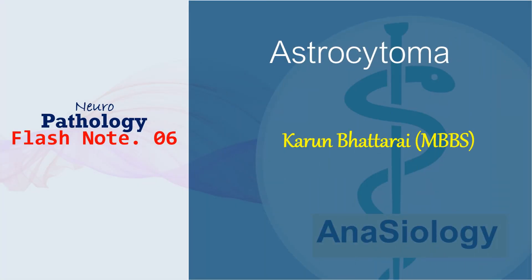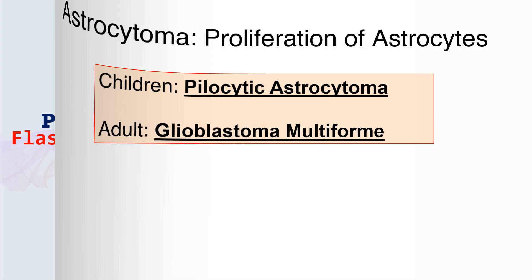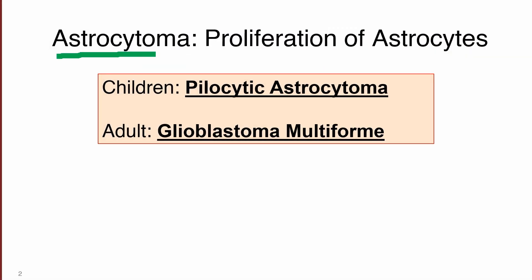Hello and welcome to our Flash Node series, where we discuss high-yield clinical topics with proper clinical correlations. This is Flash Node 6, covering astrocytoma. Before starting, we need to understand the basic functions of astrocytes: they help in glial cell formation, formation of the blood-brain barrier, and homeostasis of neurotransmitters and ions like potassium.